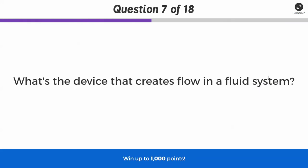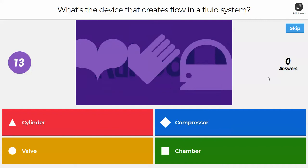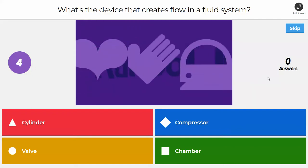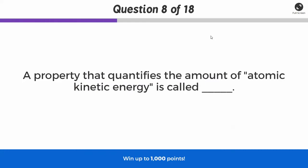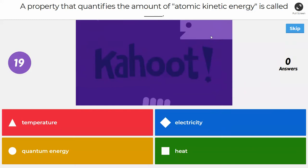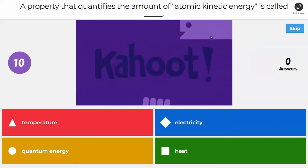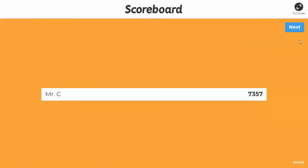What's the device that creates flow in a fluid system? Is it a cylinder? Is it a compressor? Is it a valve? Or is it a chamber? The correct answer is it is a compressor. You also may hear it called a pump. A pump can also create flow in a system. All right, next question. A property that quantifies the amount of atomic kinetic energy. What's that called? Is it temperature, electricity, quantum energy, or heat? If you said temperature, temperature is correct. That is the, and it's actually the average atomic kinetic energy within a substance. It's sort of a standardization.